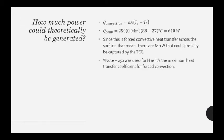How much power could theoretically be generated? From the two equations used, we found that we could produce a total of 610 watts. Since this is forced convective heat transfer across the surface, there were 610 watts that could possibly be captured by the TEG. A value of 250 was used for H, as it is the maximum heat transfer coefficient for forced convection.